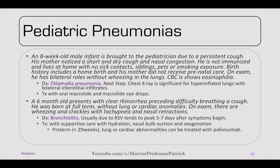An eight-week-old male presents with a persistent short, dry cough and nasal congestion. He's not immunized, no sick contacts, and his mother had no prenatal care with a home birth. On exam, bilateral crackles without wheezing; CBC shows eosinophilia. This is too young for asthma — the diagnosis is chlamydial pneumonia. Chest x-ray shows hyperinflated lungs with bilateral interstitial infiltrates. Treatment is oral macrolides and macrolide eye drops. Up to 40% of patients don't present with the accompanying neonatal conjunctivitis and instead present with chlamydial pneumonia.